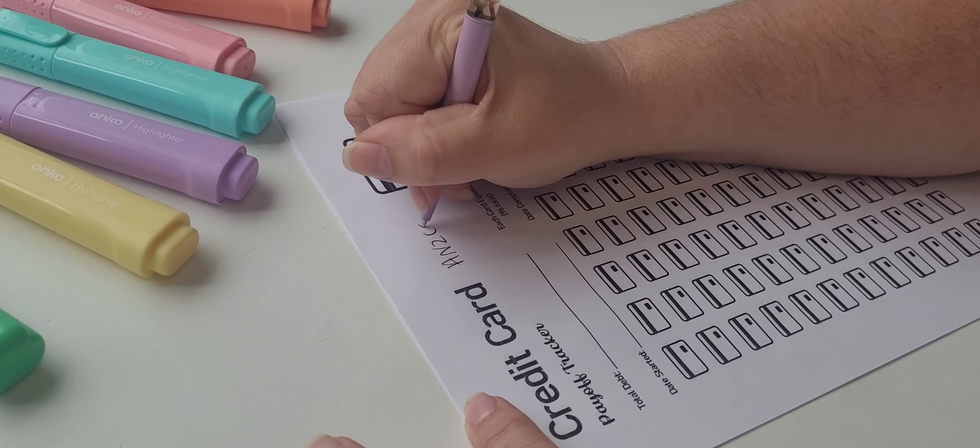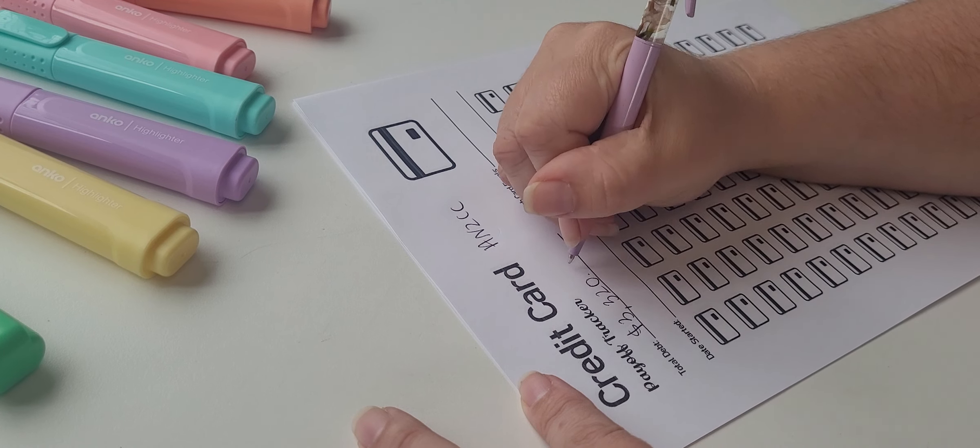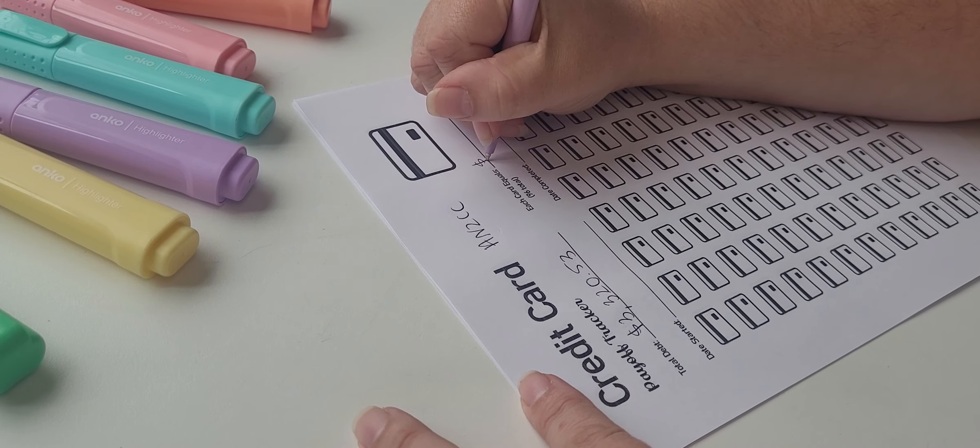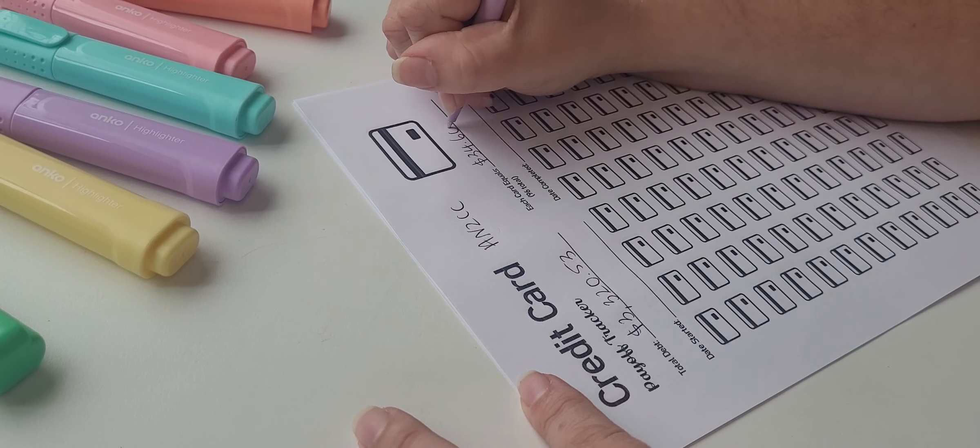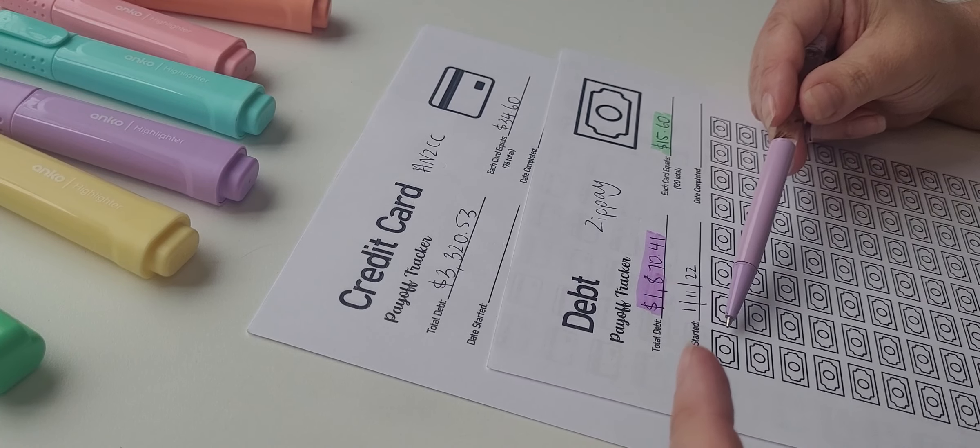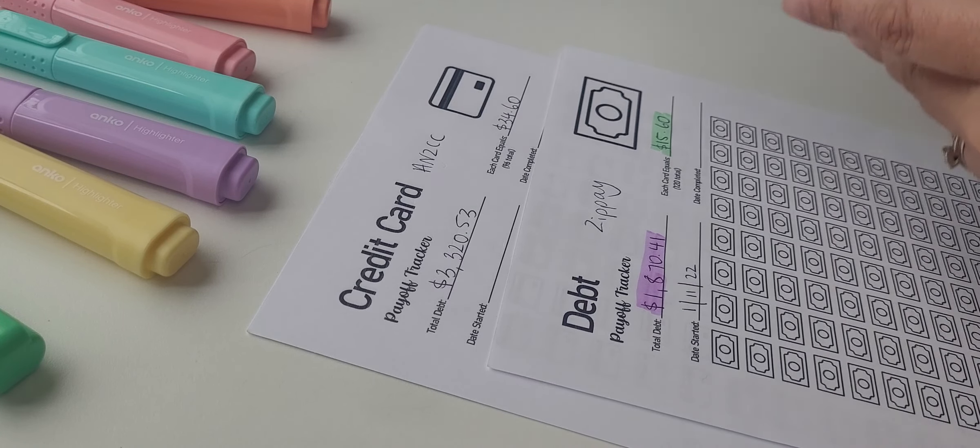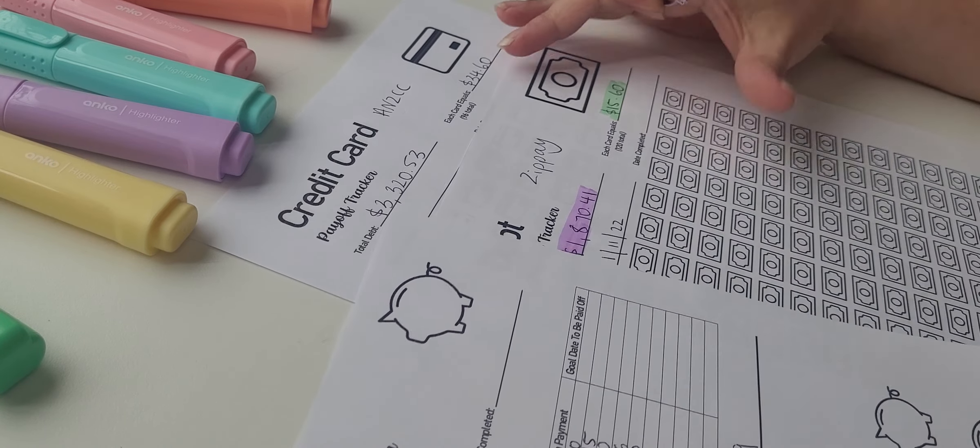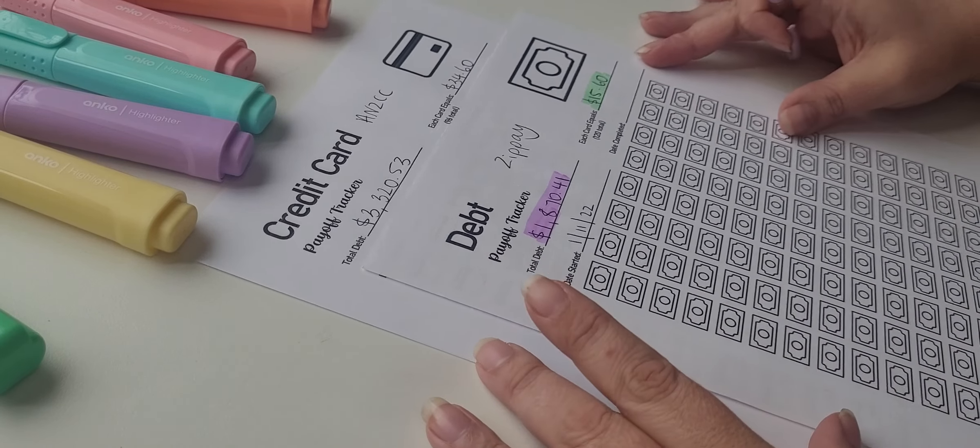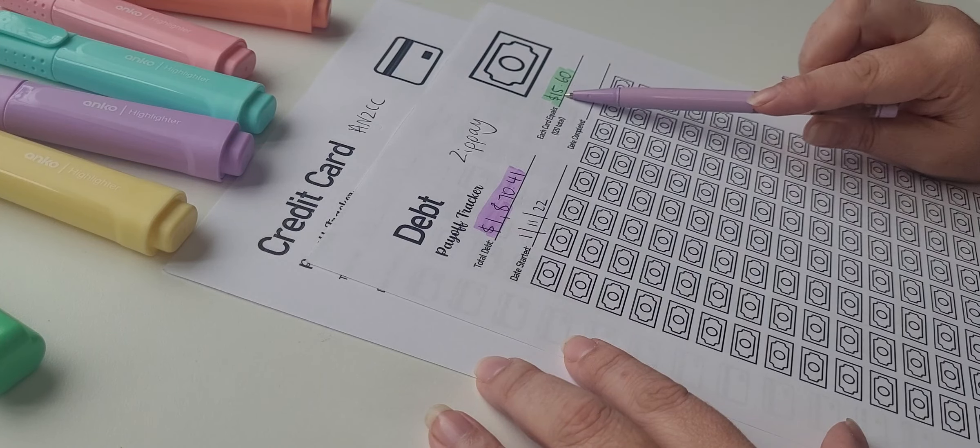Now I'm just going to write ANZ credit card total here being $3,320 and 53 cents. So now these are 96, there's 96 cards that we're going to color in. Each card here is $34.60. Now, on these, you don't want to color in the bill, the amount that you pay per, like when I did my minimum payments, let me go back to that.